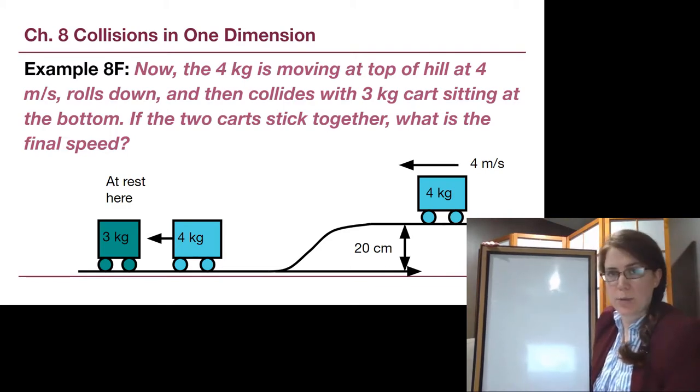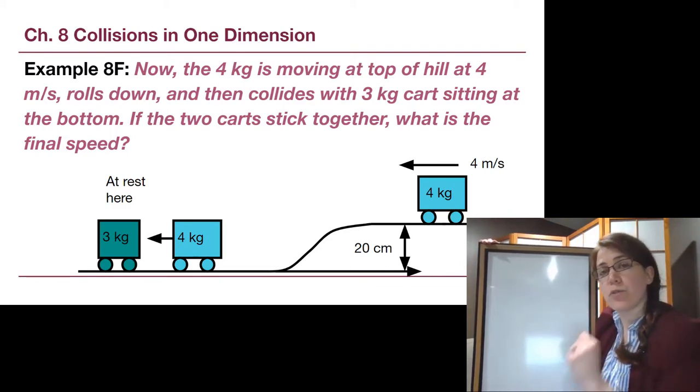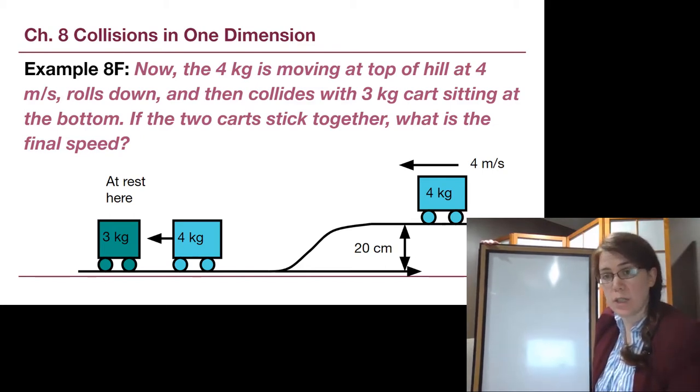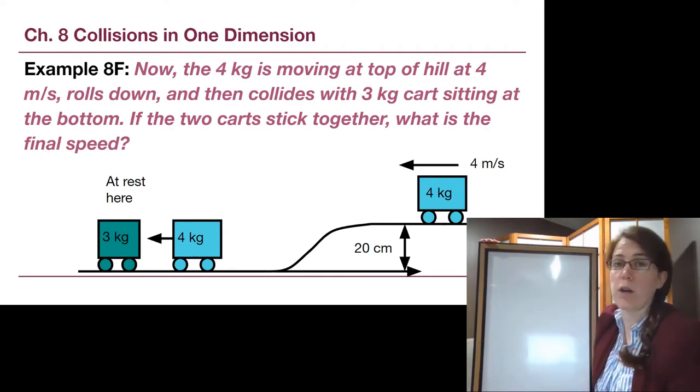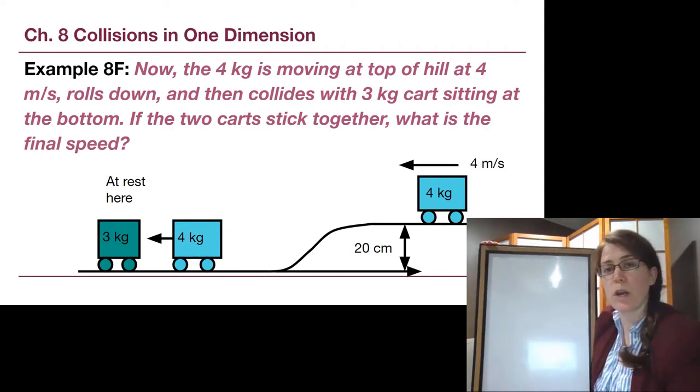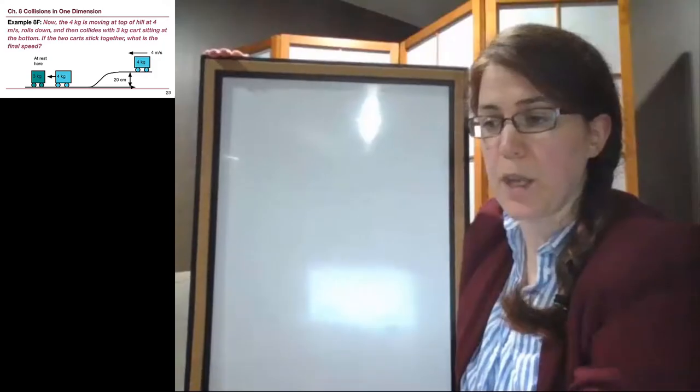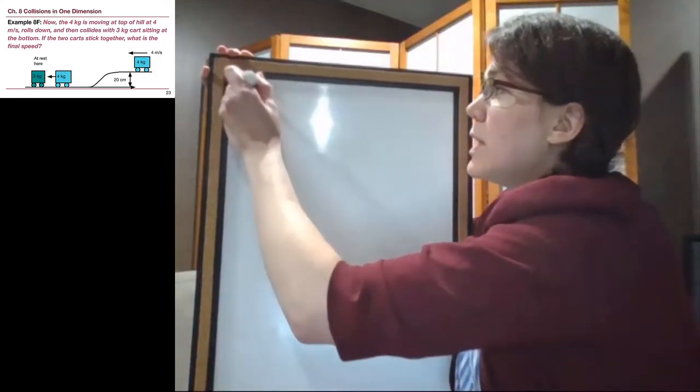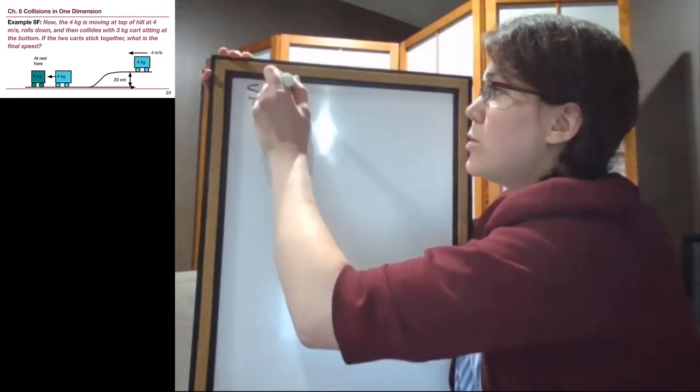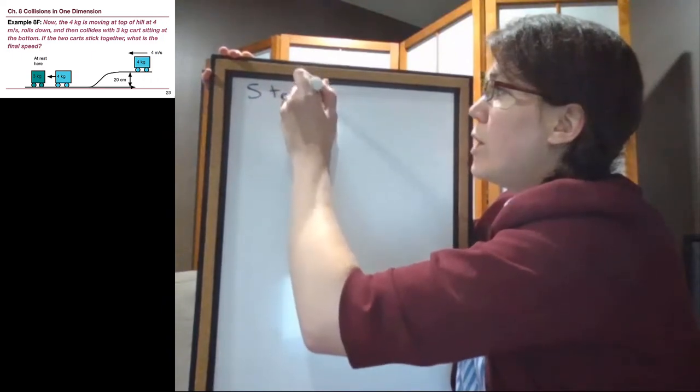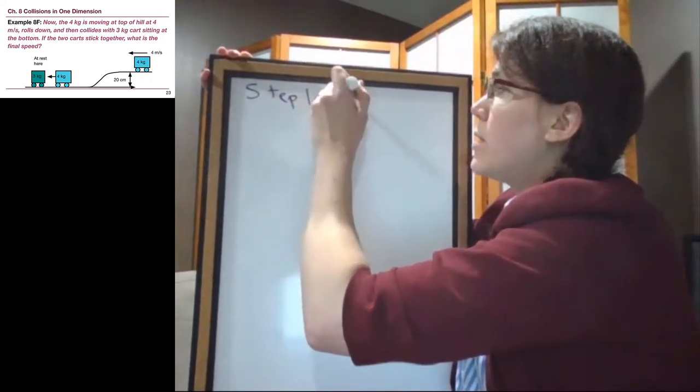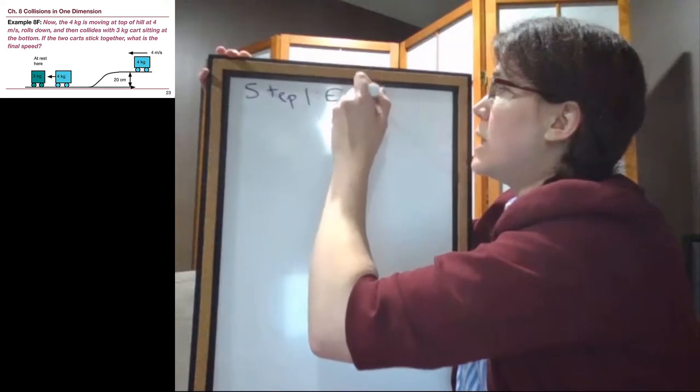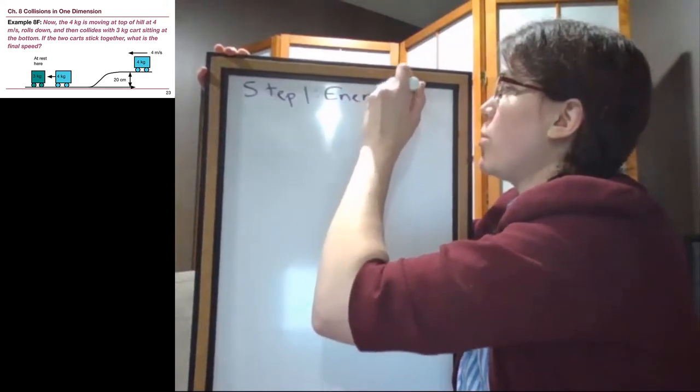But the really important distinction between this example and the previous one is that the first thing that happens in this problem is not the collision, but just the one 4-kilogram cart moving around in a way that we can track its energy. So in this example, the third two-step problem that we have, the first step here is not the collision, but is instead an energy balance problem.